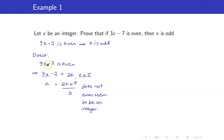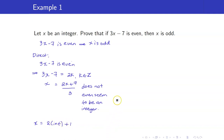Therefore, it's difficult to get to your goal which is X equals 2 times an integer plus 1. So we proceed by proof by contrapositive. What is the contrapositive of this implication — if 3X minus 7 is even, then X is odd?